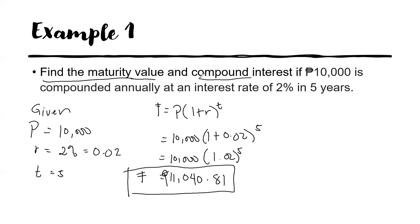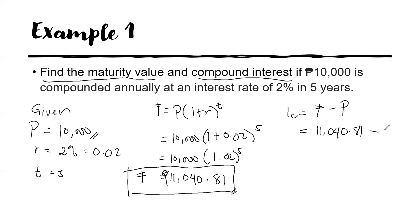How about the compound interest? The compound interest IC is equal to F minus P. This is the future value and this is the principal. So, we have 11,040.81 minus the principal, which is 10,000. The compound interest is 1,040.81 pesos.